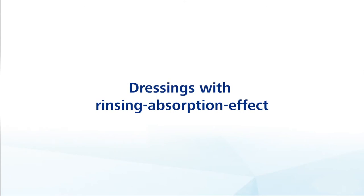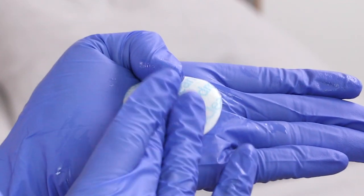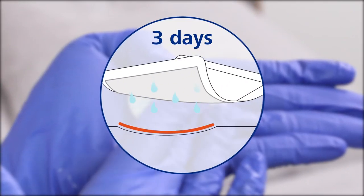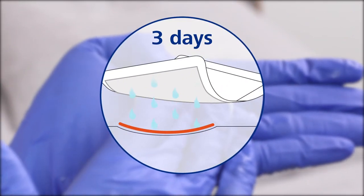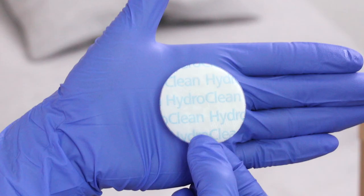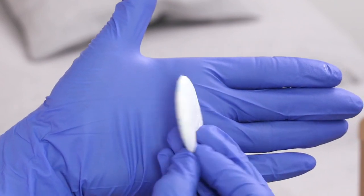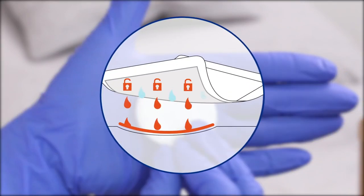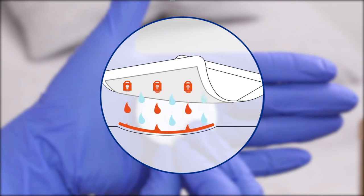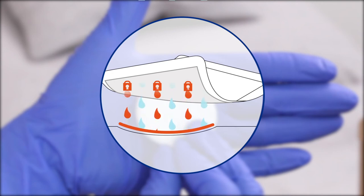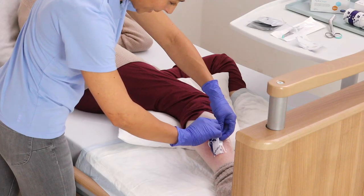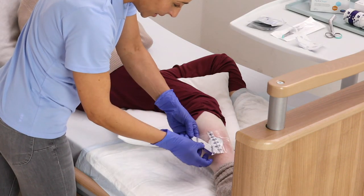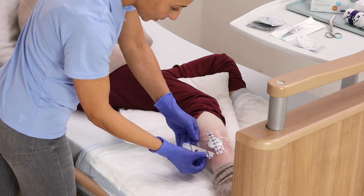Dressings with rinsing absorption effect. This unique dressing type releases a sterile ringer solution into the wound for three days. At the same time, exudate is continuously absorbed and retained in the wound dressing. This rinsing absorption effect results in a long-lasting cleansing effect. The fixing is done, for example, with a transparent foil bandage.